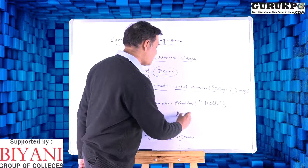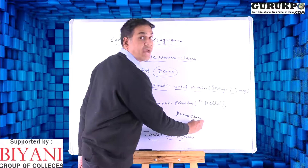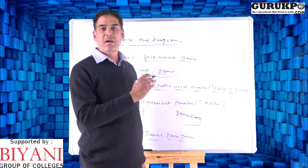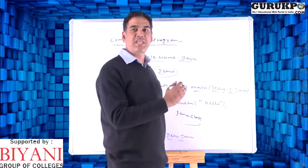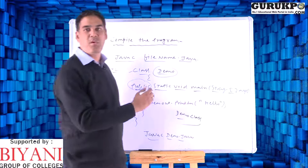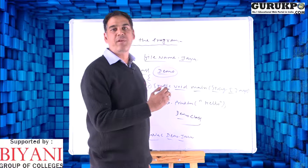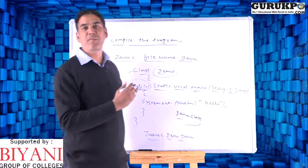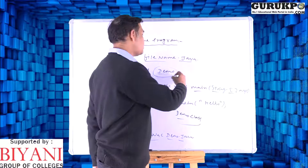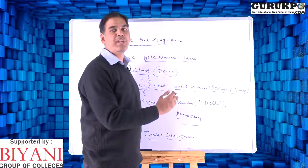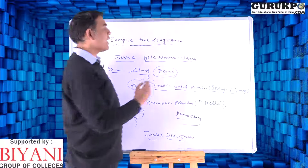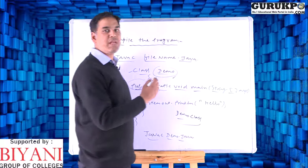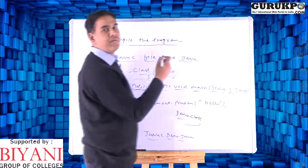The class file is a platform-independent file and it can be executed on any platform, on any operating system. So demo.class will be created at a particular location and will be executed. This is basically a platform-independent language — that is why demo.class can run on any platform. Bytecode is a combination of machine code and human-readable code both included together.